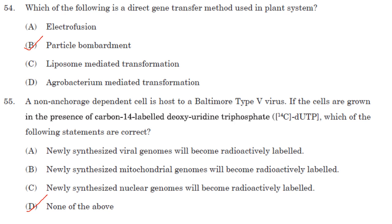Which of the following is a direct gene transfer method used in plant systems? Direct gene transfer means DNA is directly introduced into the plant genome — that is by particle bombardment. Answer is option B.